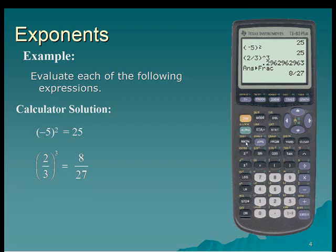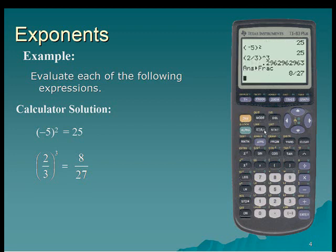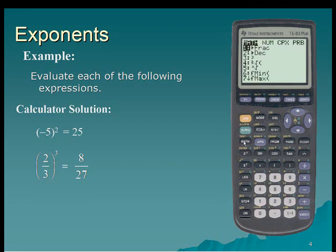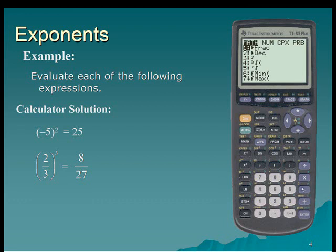There is also a built-in cube function located in the Math section — it's the 3rd option. Back on the home screen, I'll enter 2-thirds again, but this time instead of using my caret, I'll go into the Math function and select the 3rd option. I'll then convert the decimal to a fraction for a result of 8 over 27.